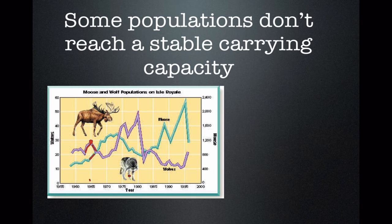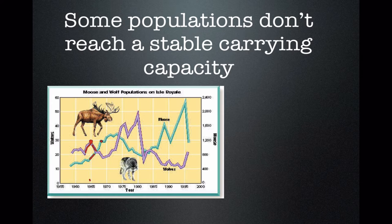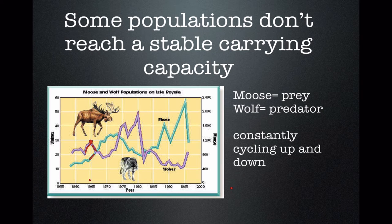Wolves reproduce more slowly than moose do, so there's a difference in reproductive speed. The moose population is kind of driving the car here. As there are lots of moose, wolves increase in population because there's lots of food. Then the moose eat most of their food, their population crashes, but there are still lots of wolves having puppies for a while. Eventually the wolf population starts to decline too. These populations kind of bounce around each other — this is a great example of a cycling population, otherwise known as a boom-bust cycle. Booms are when the population is rising rapidly, and busts are crashes when populations are falling rapidly. You frequently see this with predator and prey in nature.